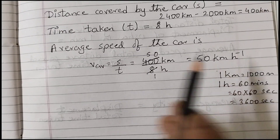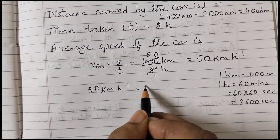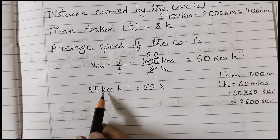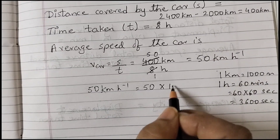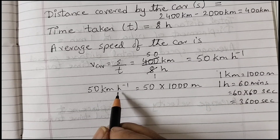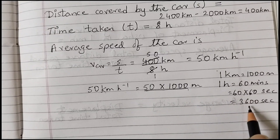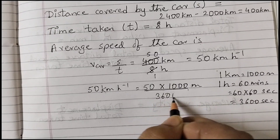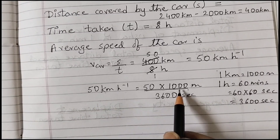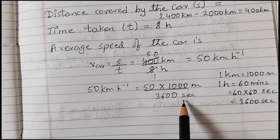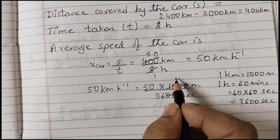Now we convert: 50 kilometers per hour means 50 multiplied by 1 kilometer, which is 1000 meters, so we get 50 × 1000 meters, divided by 3600 seconds. We converted kilometers to meters and hours to seconds. Canceling the zeros gives us a simplified fraction.